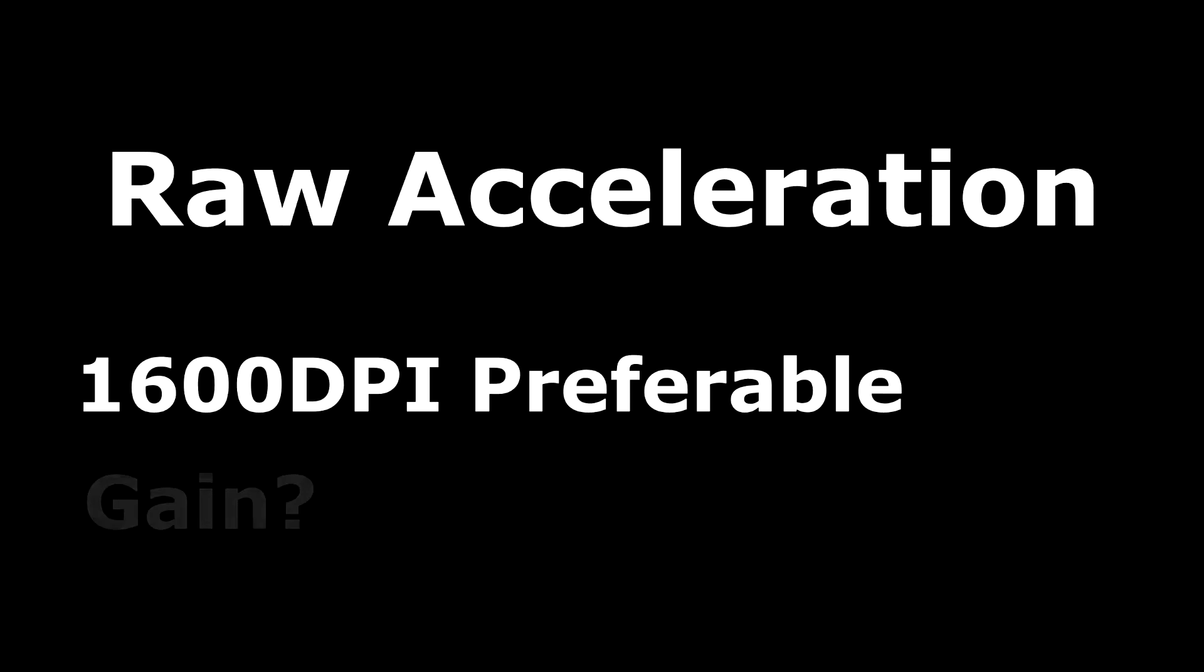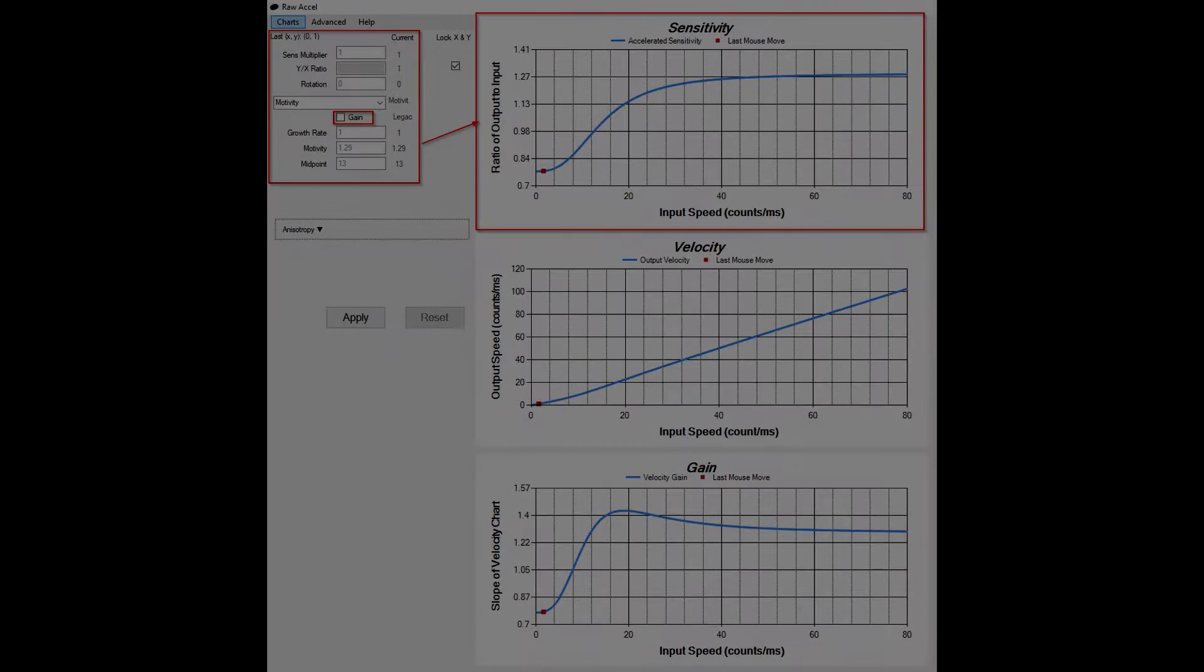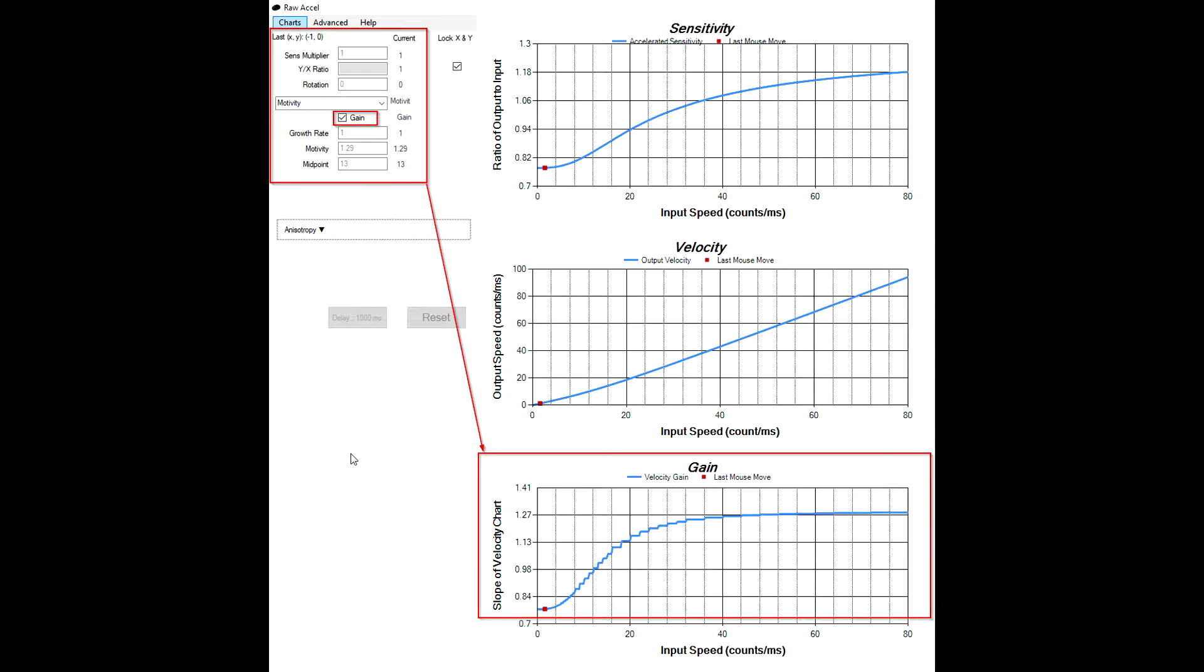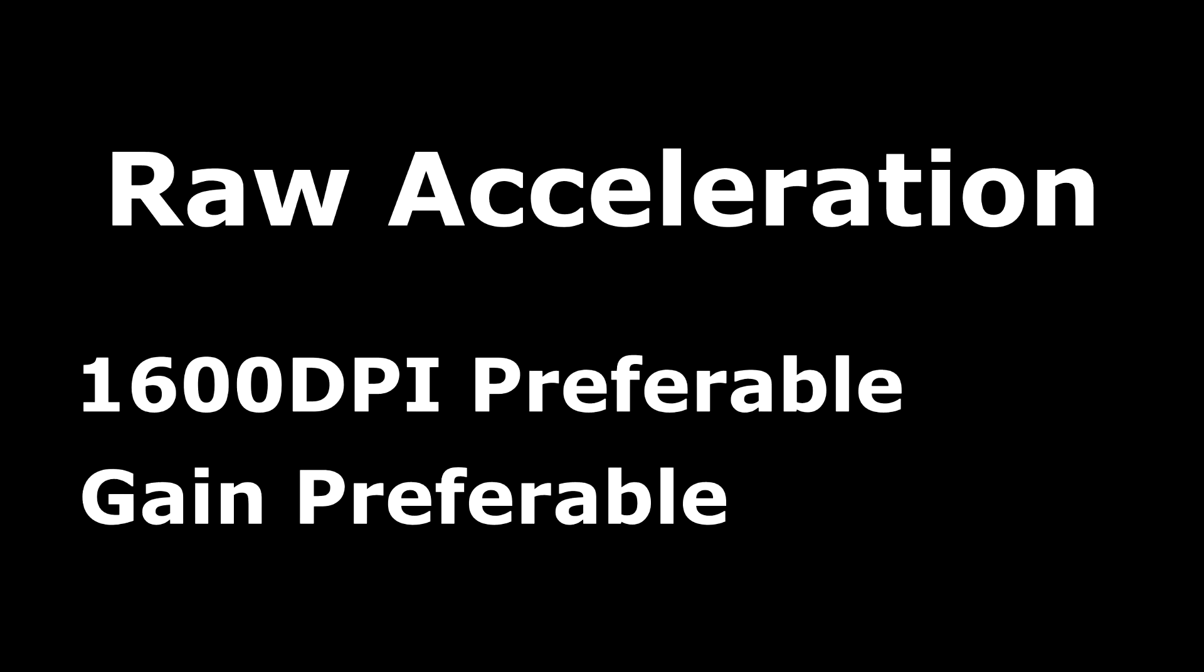Next I want to cover the gain switch. Gain is different from sensitivity and refers to the change in relationship between the input and the output. Without the gain box ticked, you are using the top graph for your acceleration, which is sensitivity. This gives input multiplied by sensitivity equals the output. If you tick the gain box, the bottom graph is activated and your acceleration settings apply to this section instead. Gain, according to Raw Accel, is a more correct way to represent a rate of acceleration, so ideally this option should be used.